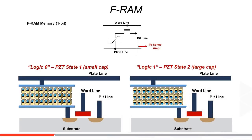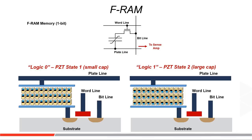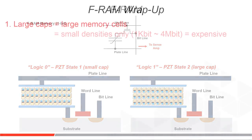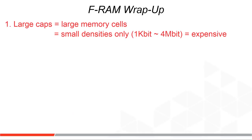This is what an FRAM cell looks like — the gate symbol with the variable PZT capacitor, and here is a cross-section. Today, the reason FRAM memories are priced higher than almost every other memory type, and the reason FRAM is only available in very small densities, is because this capacitor has to be big enough for a sense amp to measure enough charge on the capacitor plates to accurately tell the difference between a 1 and a 0.